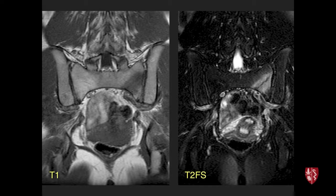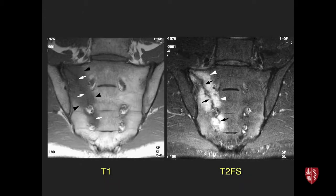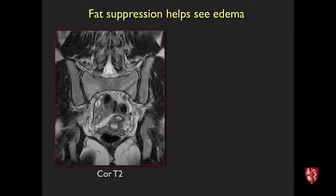Another example of sacral stress fracture shows edema in the right sacrum with the fracture line and periosteal edema along the anterior surface. Oblique coronal images show a large fracture line extending through the sacral ala toward the exit foramen — still incomplete. When a fracture line is confirmed, treatment is much more conservative with time off activity compared to a low-grade stress reaction. Fat suppression is essential: without it, edema is nearly invisible.